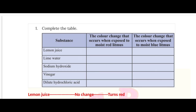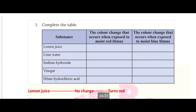What do you say? There is a substance. In this one substance, we look at the red litmus paper and blue litmus paper color change. That's what we did.